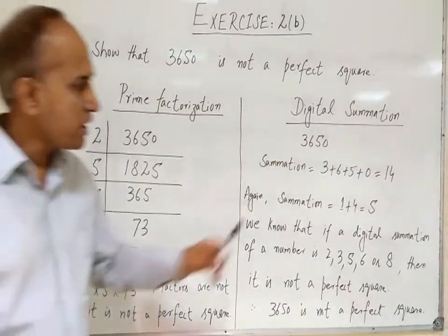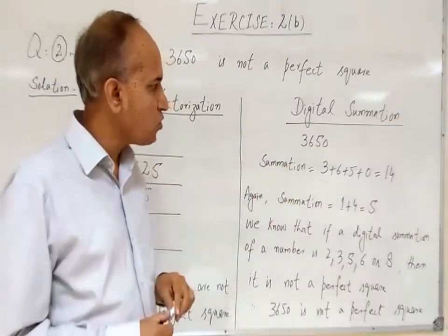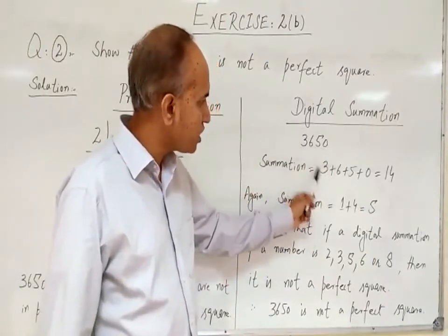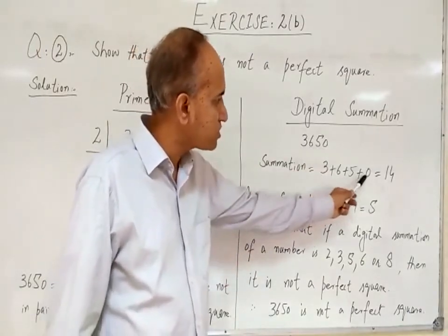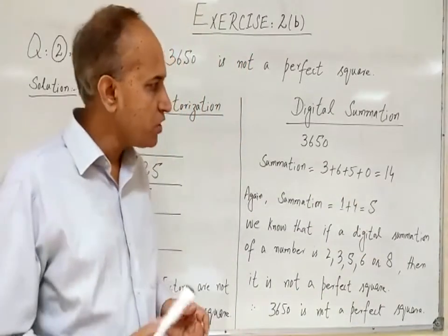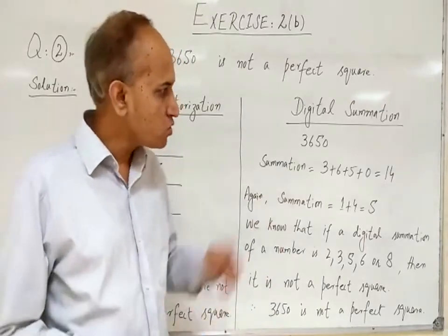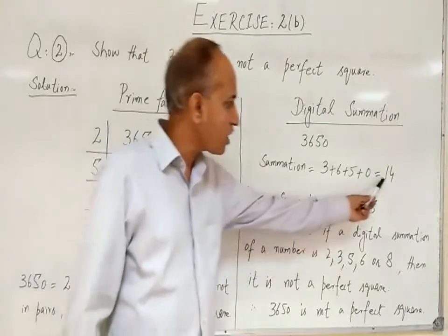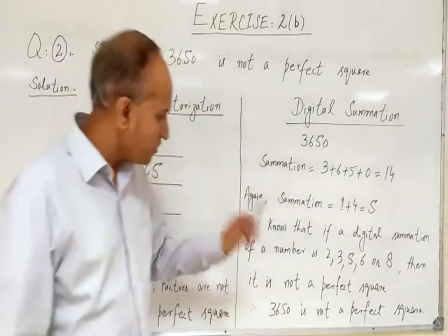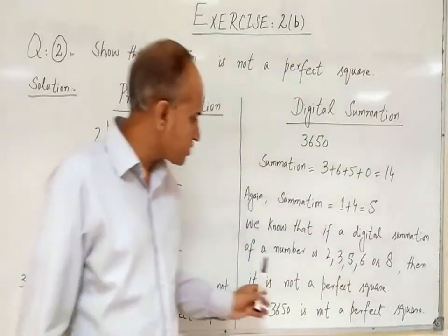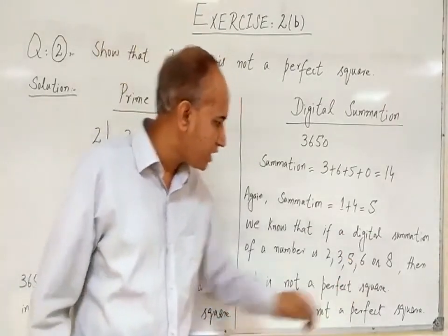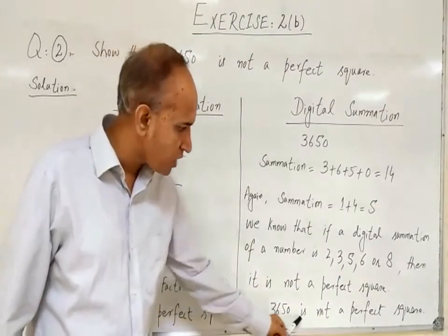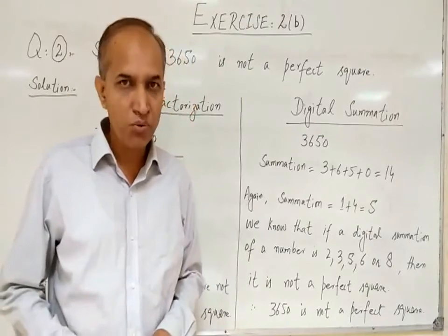By digital summation, we add all the digits of 3650: 3 + 6 + 5 + 0 = 14. Since 14 is greater than 9, we add again: 1 + 4 = 5. We know that if the digital summation of a number is 2, 3, 5, 6, or 8, then it is not a perfect square. Since the summation is 5, we conclude that 3650 is not a perfect square.